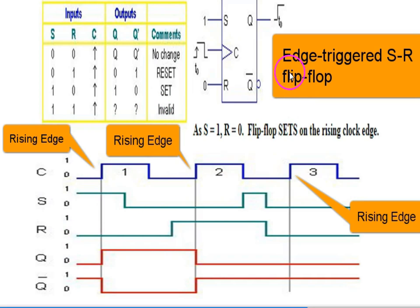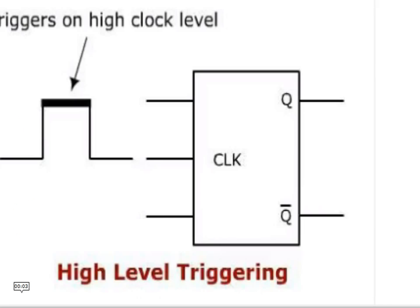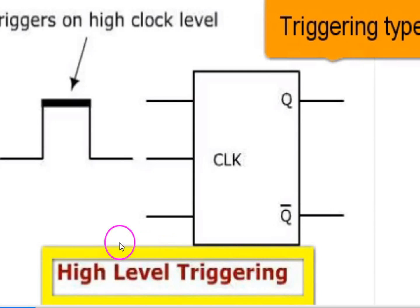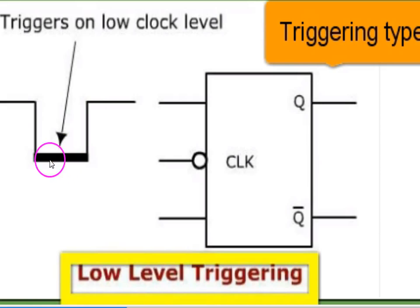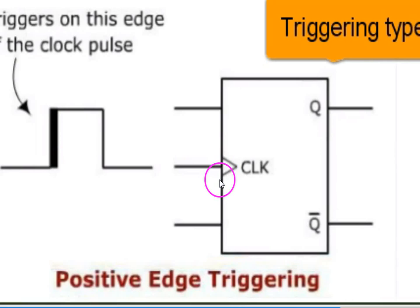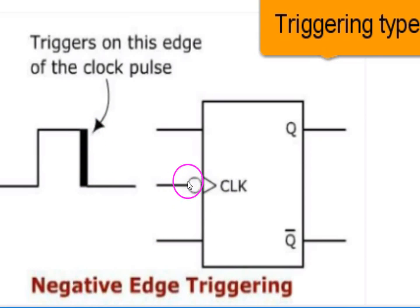This is how the RS flip-flop works with edge triggering — it triggers on the rising edge only. For high-level triggering, only that high level will trigger the flip-flop; S and R inputs are transmitted when this level occurs. For low-level triggering, the low level will trigger. For positive edge triggering, the rising edge triggers — the symbol has a triangle. For negative edge triggering, the falling edge triggers — the symbol has a circle and a triangle.